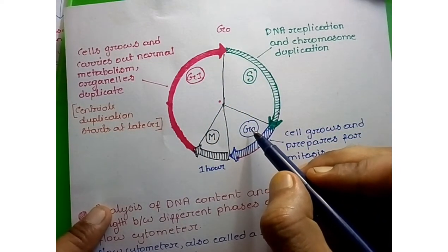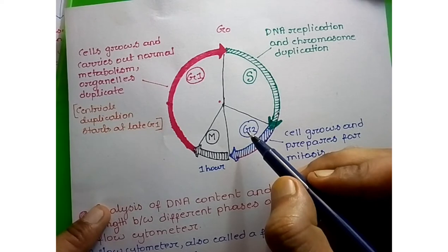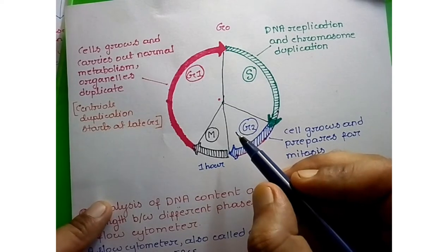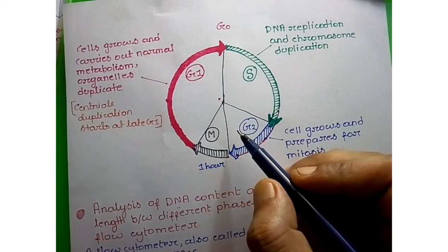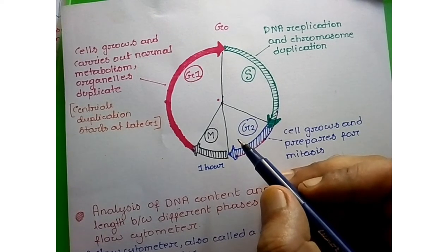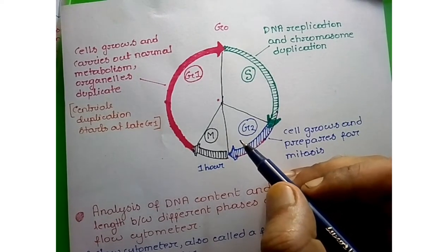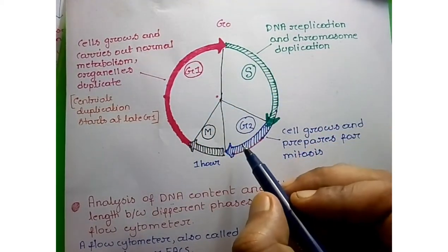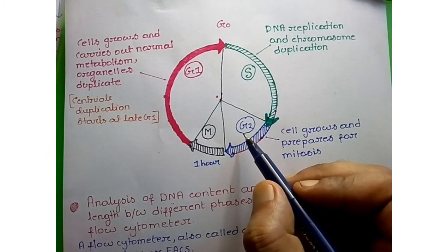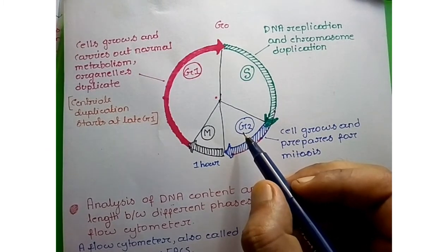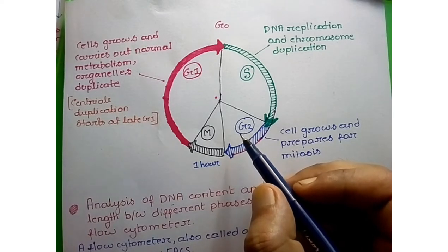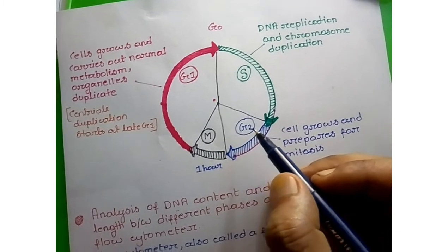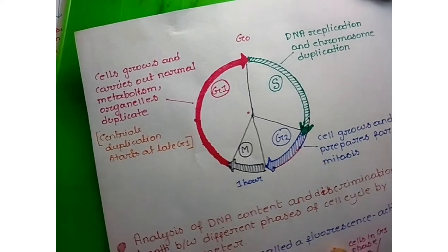These three interphase phases are very important because we get two daughter cells from a single cell. To do that, we need to double our organelles and double the amount of DNA. So G1, S, and G2 together help in the duplication of organelles, DNA, and many other proteins.